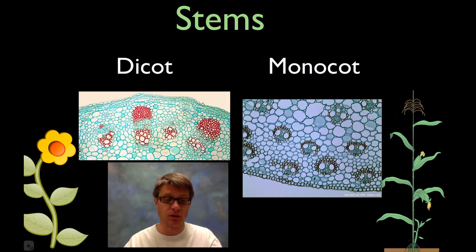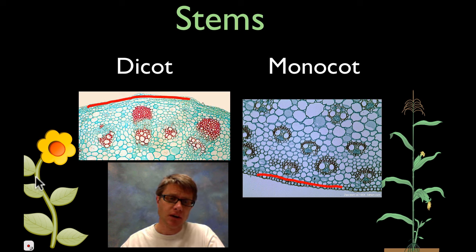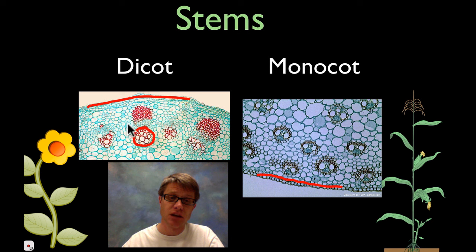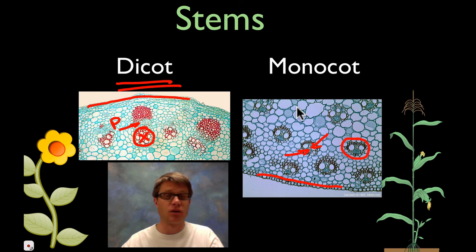Moving above ground into the shoot system, we look at stems. We still have the epidermis on the outside, with a cuticle on the outside of that. In the dicot, the vascular tissue is moving from the center of the root toward the edge of the stem, because it eventually has to flow out into the leaves. In the dicot stem, the xylem is closer to the edge and phloem is beside it. In the monocot, the xylem and phloem are bundled together — I've always thought these look like little monkey heads. The other cells are all ground tissue.